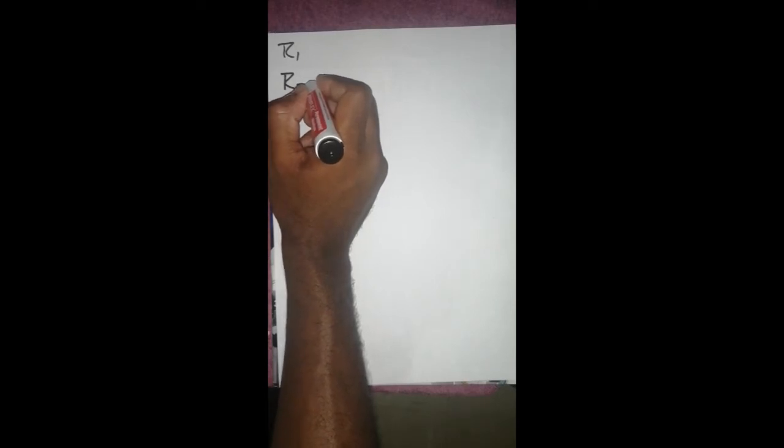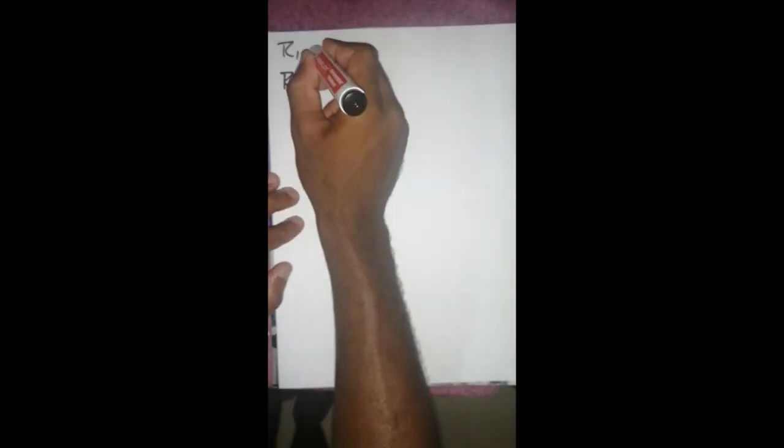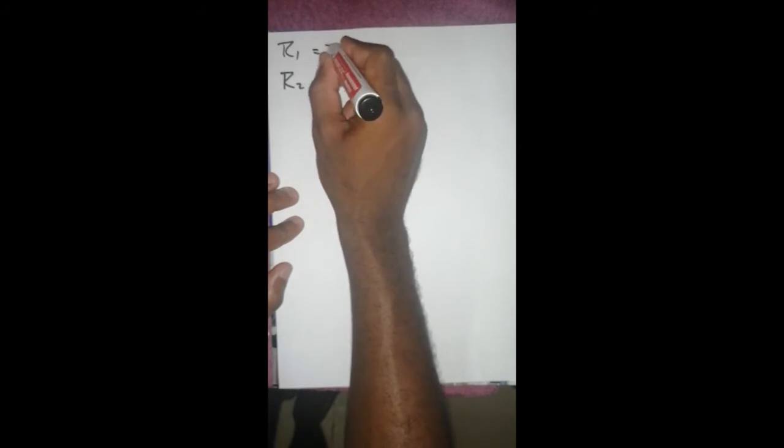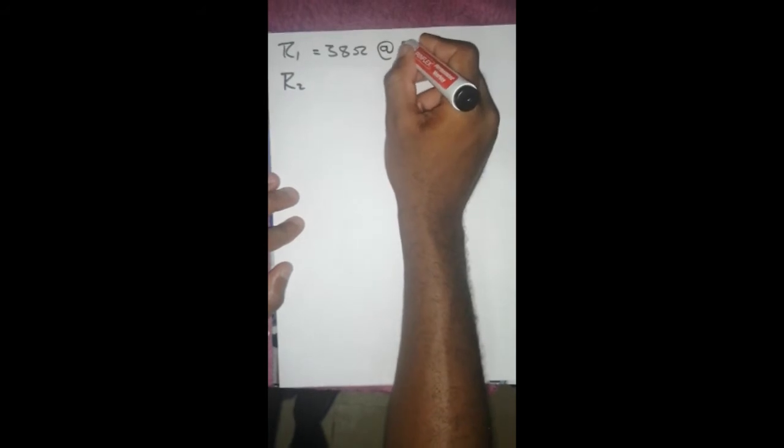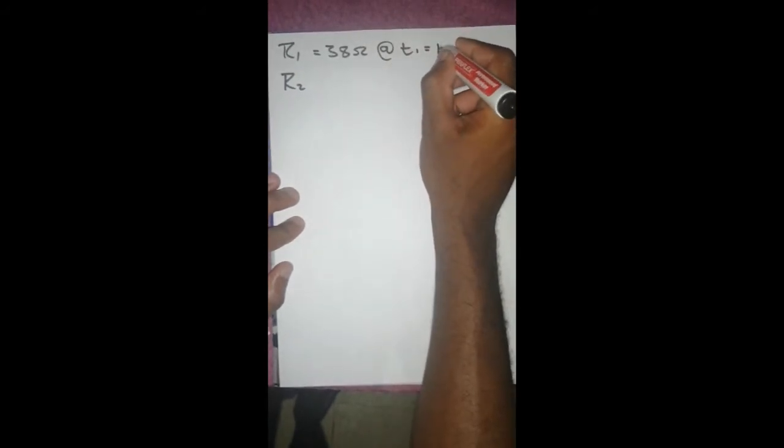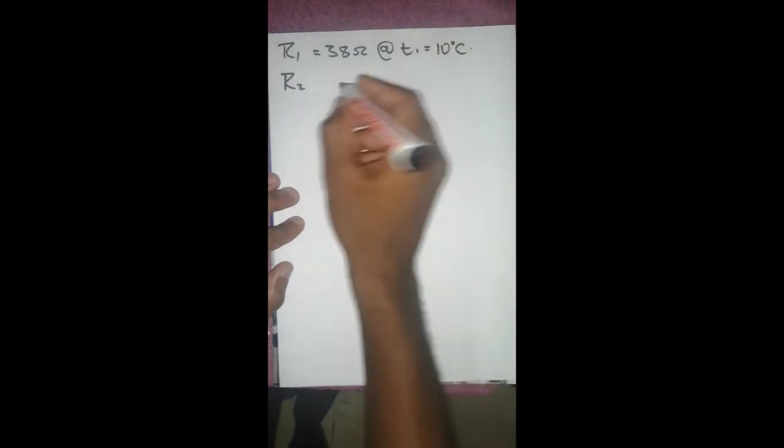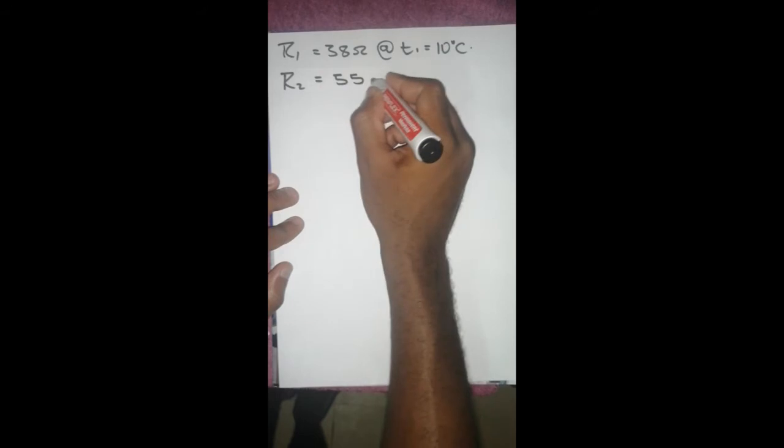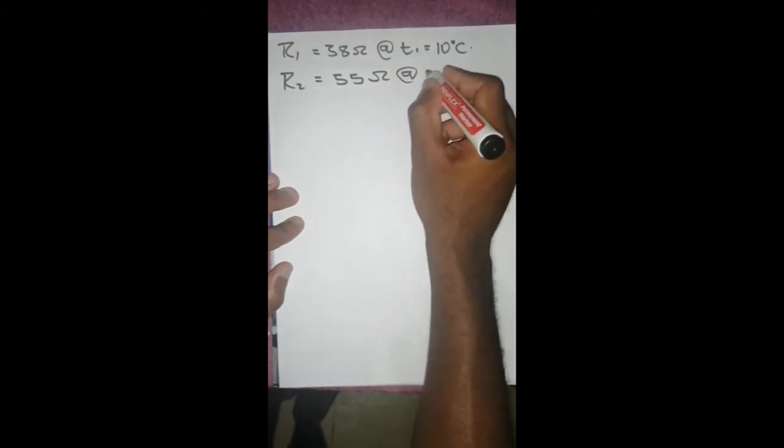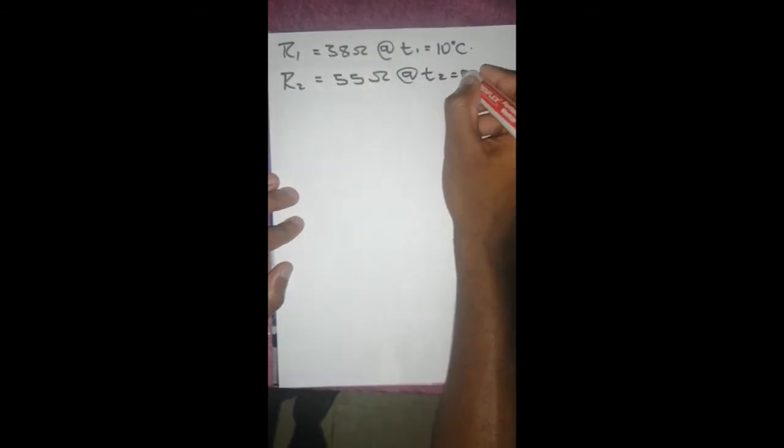We have R1, R2, whereby our R1 is 38 ohms at T1 equals to 10 degrees Celsius. We've got R2 which is 55 ohms at T2 equals to 65 degrees Celsius.